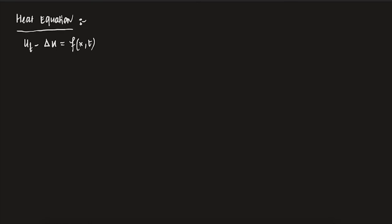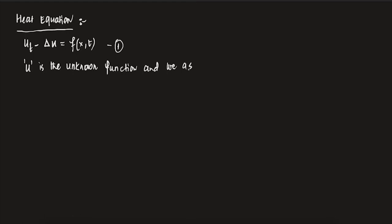This will be in some domain — we will write down all the domain details. First, let us explore more what this means. u here is the unknown function. And you see, I write u_t, so u depends on a variable t. I also wrote x here. We assume x is in R^n and t lies between 0 and infinity.